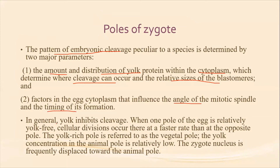In general, yolk inhibits cleavage. When one pole of the egg is relatively yolk-free, cellular division occurs there at a faster rate than at the opposite pole. The yolk-rich pole is referred to as the vegetal pole, while the yolk concentration at the animal pole is relatively low. The zygote nucleus is frequently displaced towards the animal pole for cleavage.